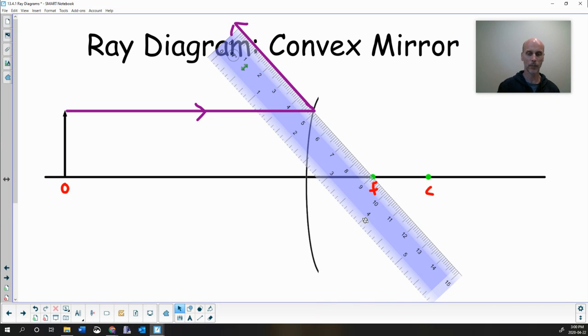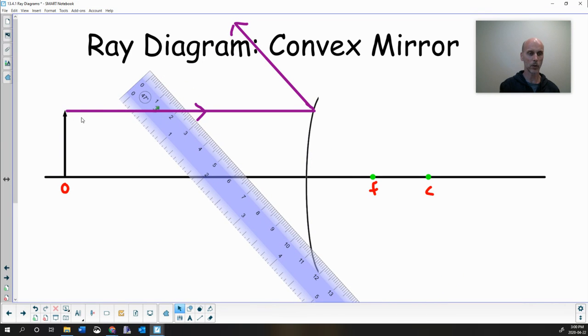So it bounces off and heads off up in this direction indefinitely. If we have to extend it later on, we will, but we'll see if we need to do that. So there's our first ray.